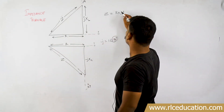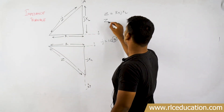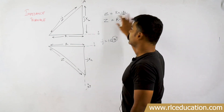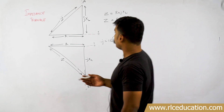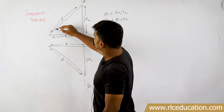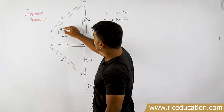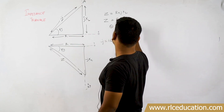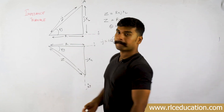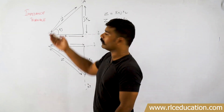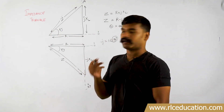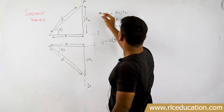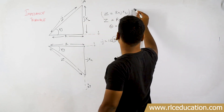If you write this in complex form, it can be written as either R plus Jxl or R minus Jxc — that is the impedance. The angle between the hypotenuse and this side is called the impedance angle theta, and theta is nothing but tan inverse of X by R. Now what I will do is convert this impedance triangle into a power triangle by multiplying both sides with I squared.